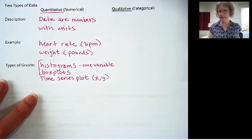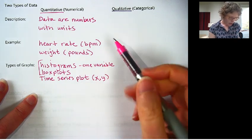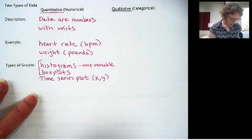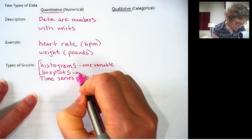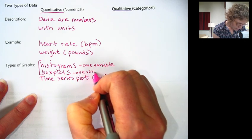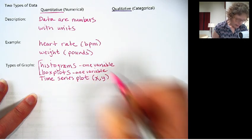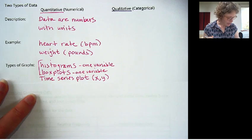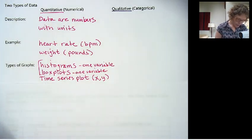You can get a single variable, collect data on a single variable, such as heart rate, and make a histogram or a box plot. And I'll be showing you those soon in another video. Let's switch over to the qualitative.